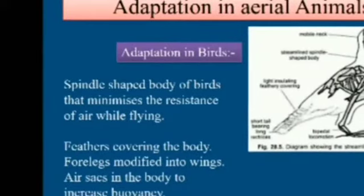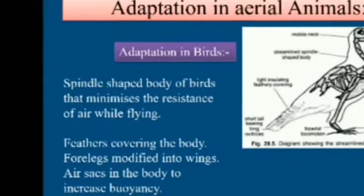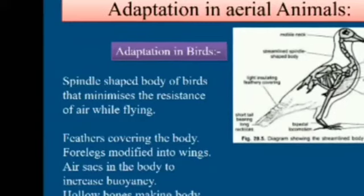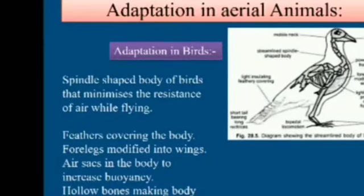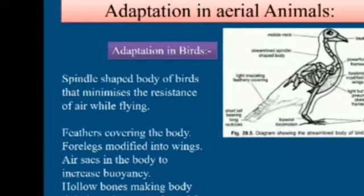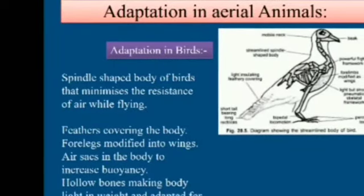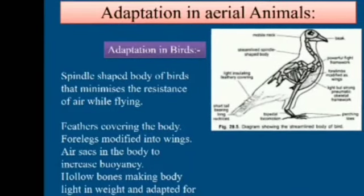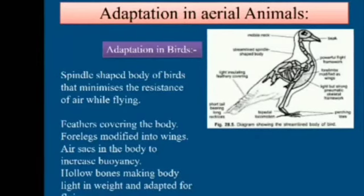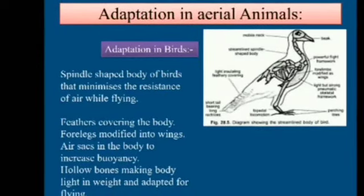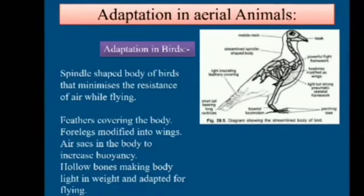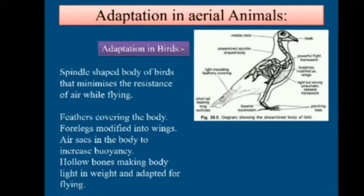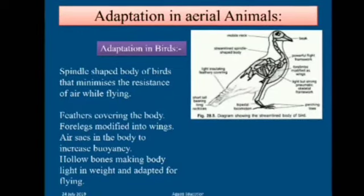It is time to see the adaptation in aerial animals. Aerial animals include all types of birds. In the diagram, all the modifications in the body of a bird are shown: spindle-shaped body that minimizes air resistance while flying, feathers covering the body, forelegs modified into wings, air sacs in the body to increase buoyancy, and hollow bones making the body light in weight and adaptive for flying.